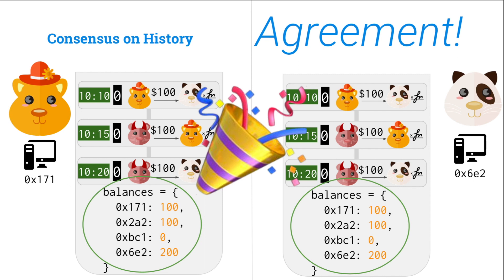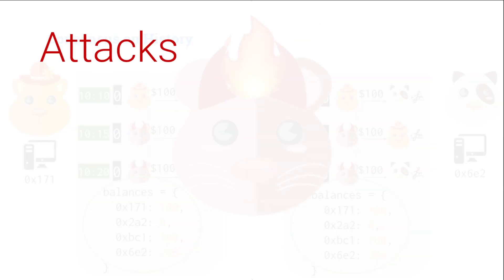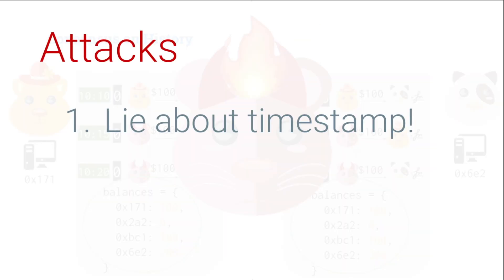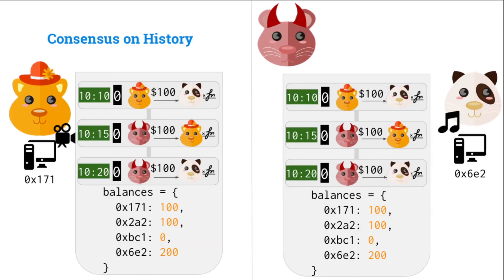We've got agreement, we've got consensus. But not so fast — unfortunately, Mallory has an evil idea again. There are two attacks that are still problematic even with this timestamp ordering. First, Mallory can lie about the timestamp. And the second problem is Mallory can selectively propagate transactions. Let's look at lying about a timestamp first.